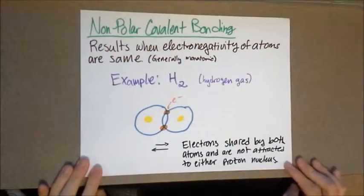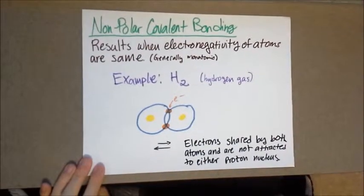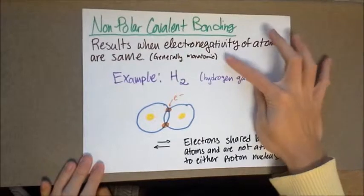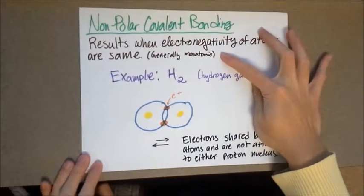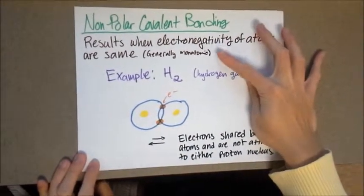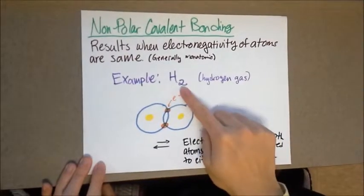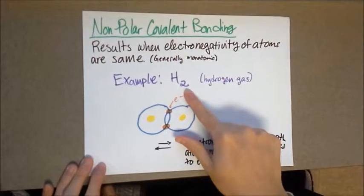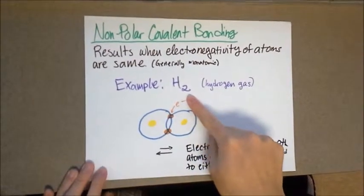So the last bond we're going to talk about is non-polar covalent bonding, which results when electronegativity of the atoms are exactly the same. And generally, these are monatomic, which means that both of the atoms are exactly the same. So let's take hydrogen, for example. A non-polar covalent bond between hydrogen is going to be with itself, of course, because they have the same electronegativity.